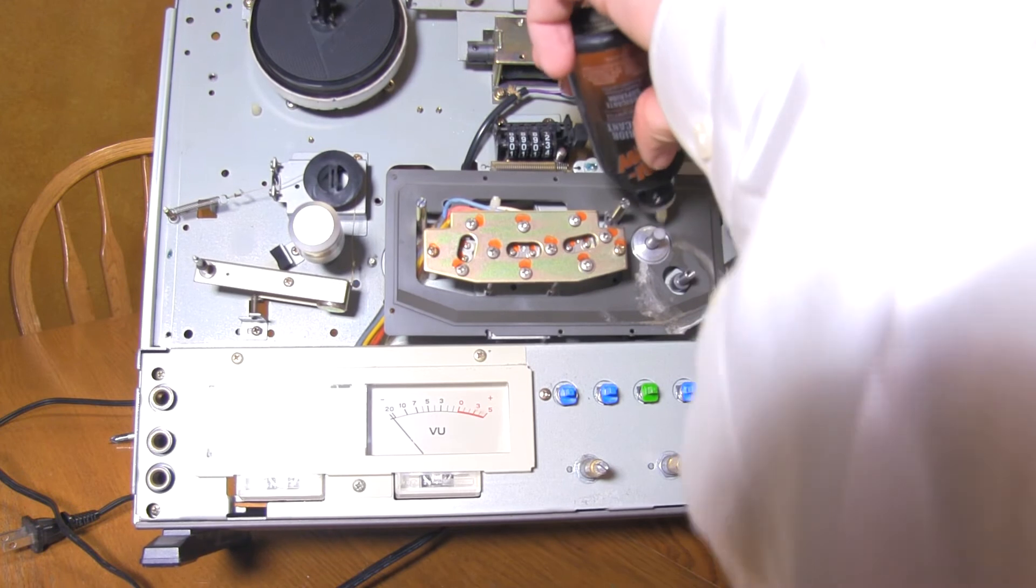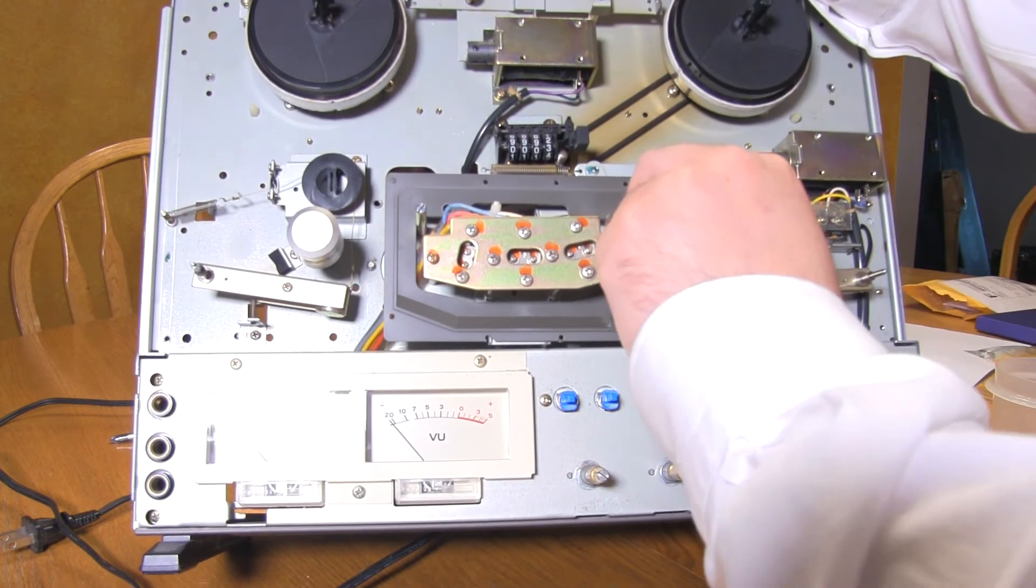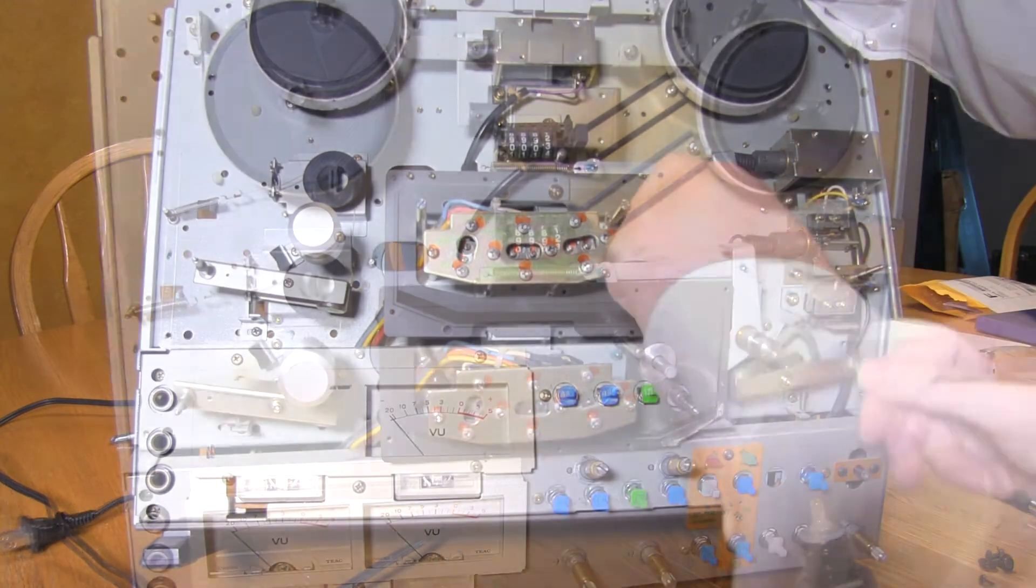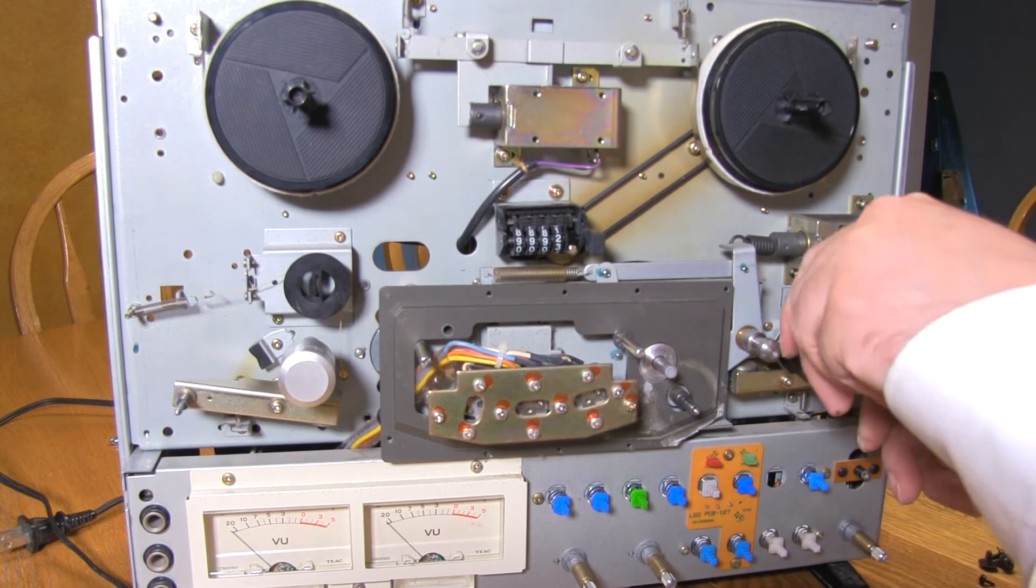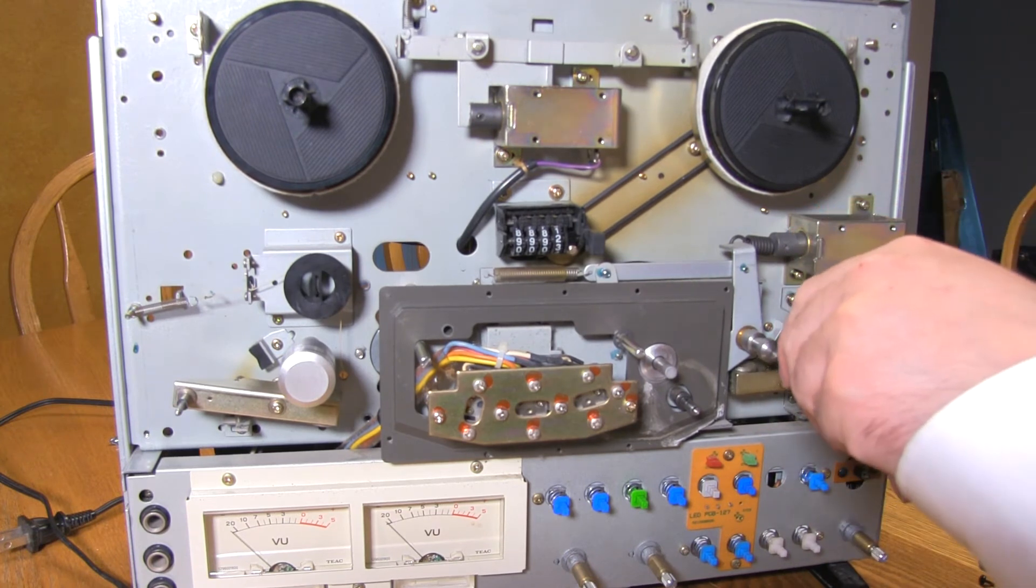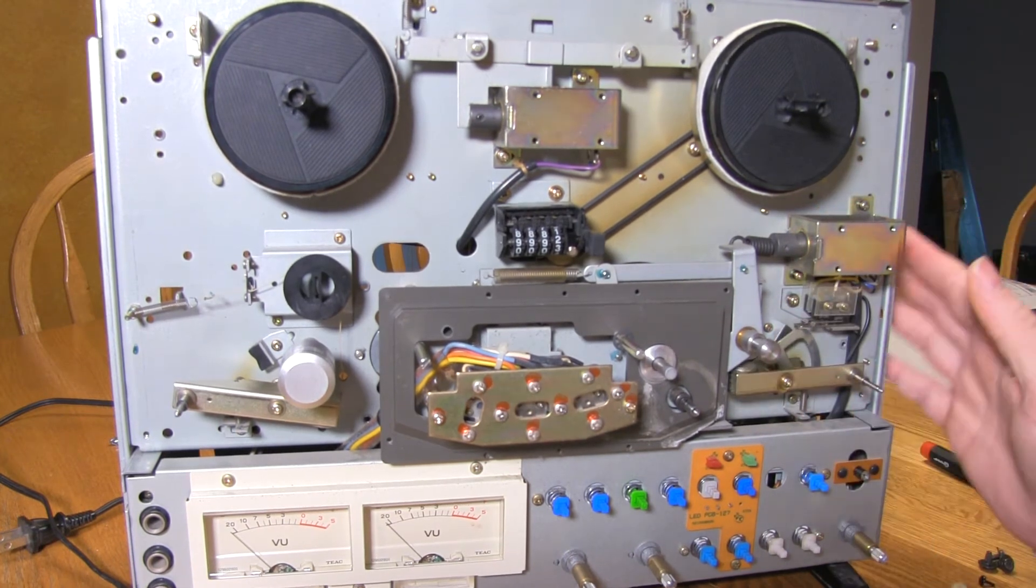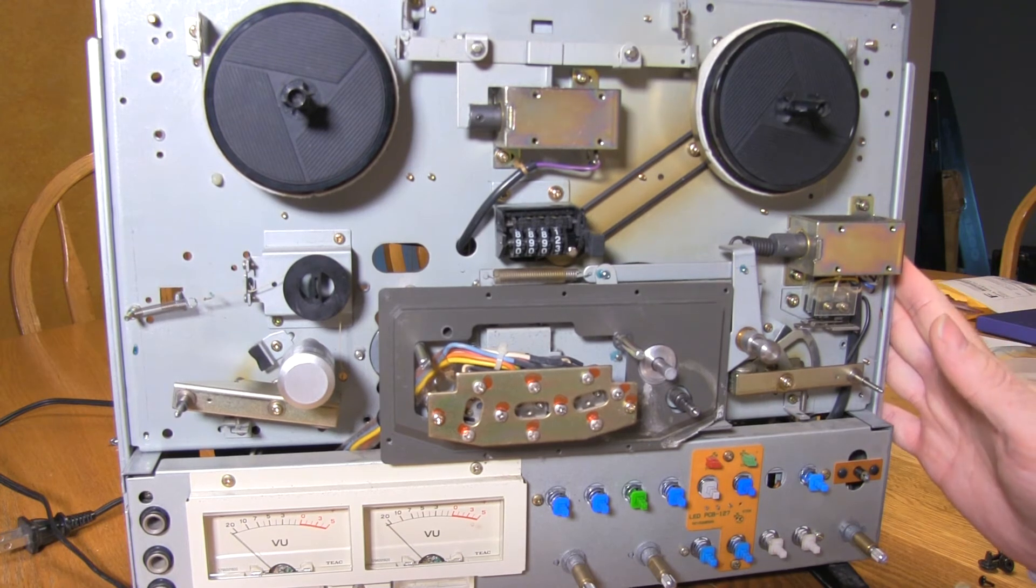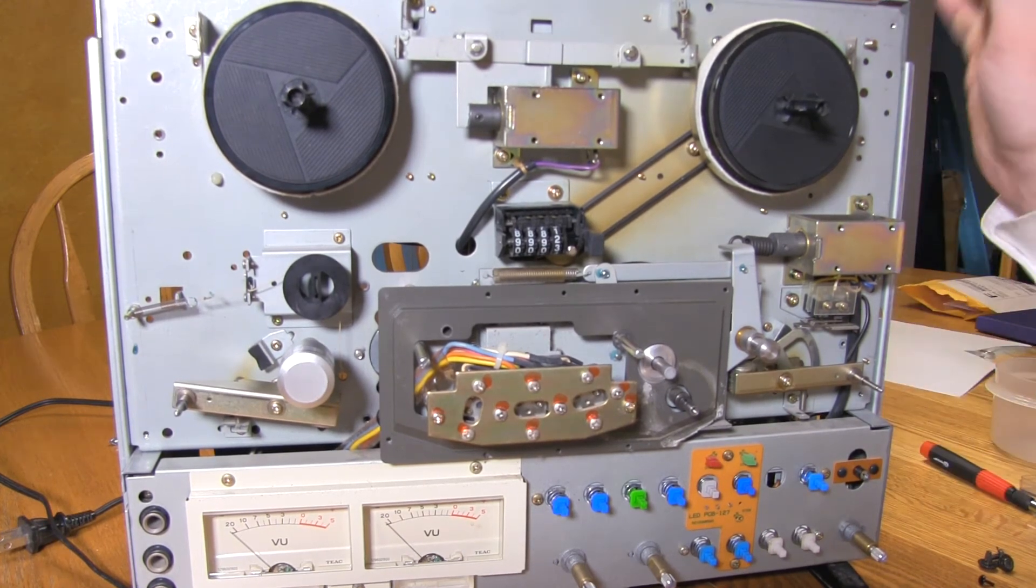A little bit of oil in the capstan bearing. Just a tiny bit for every moving part in here. These are mechanical objects. While this is a lower-end professional tape recorder, when well maintained, it can last for decades.